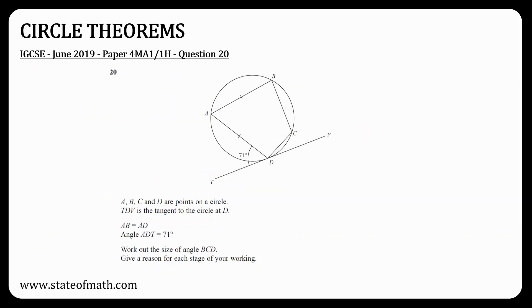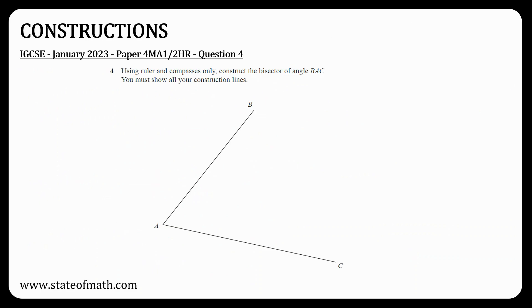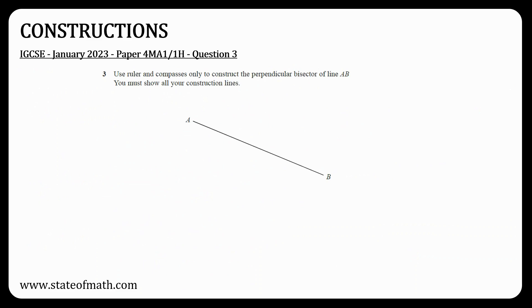Circle theorems is one of the most popular topics that might appear on both papers. It did appear in paper 1. If it appears again, I expect it to involve the alternate segment theorem, as the one that appeared on paper 1 did not involve this theorem. Don't forget to take a ruler and compass with you, since there was no question on constructions. There are two main constructions that appear in the past papers, either an angle bisector or a perpendicular bisector.